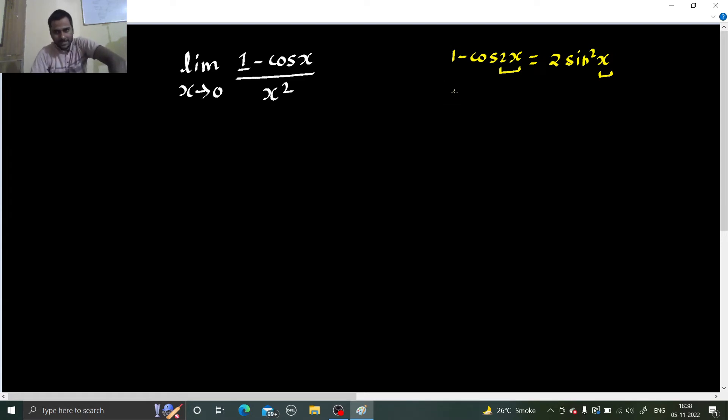So if we similarly want to write for 1 minus cos x, 2 will always be there, sine squared will always be there, x was there, now it will become half. So x by 2. So let's write that. Limit x tending to 0. In numerator, we can write 2 sine squared x by 2 divided by x squared.